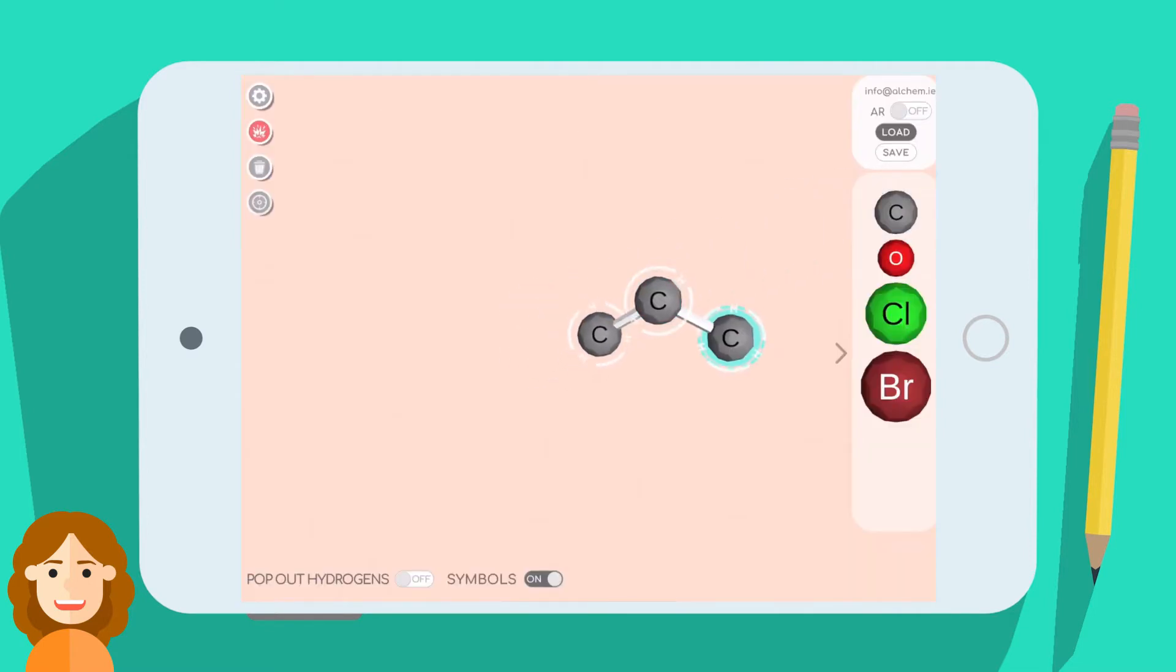First, let's talk about building molecules and seeing the geometry of each atom. Here we have an alkane, but let's make it a bit more interesting and add in a double and triple bond. If you pop out the hydrogens, you can see the geometry of each carbon.